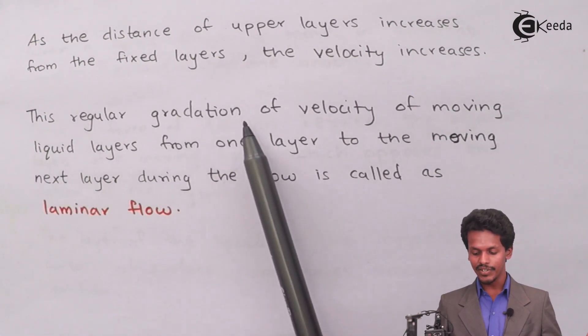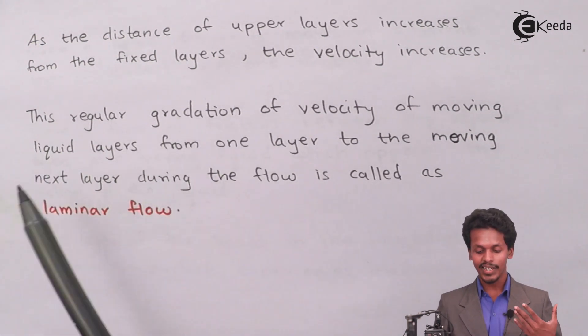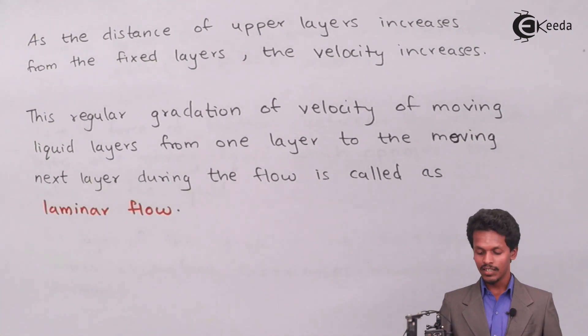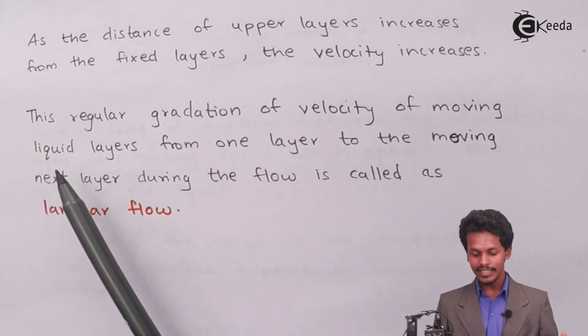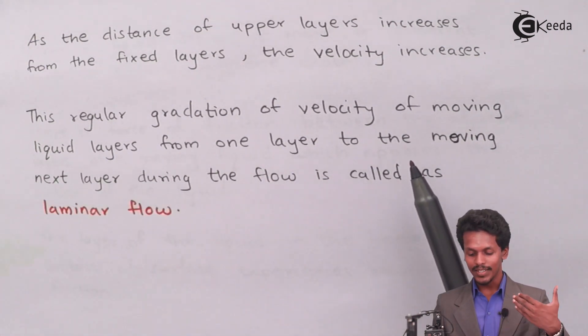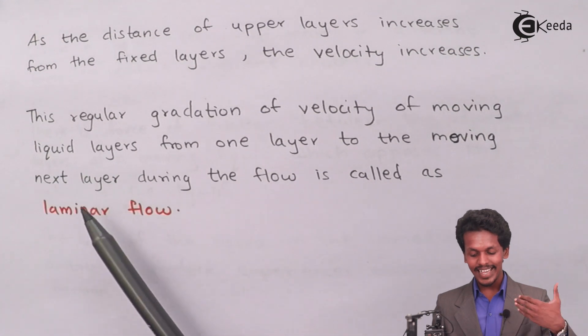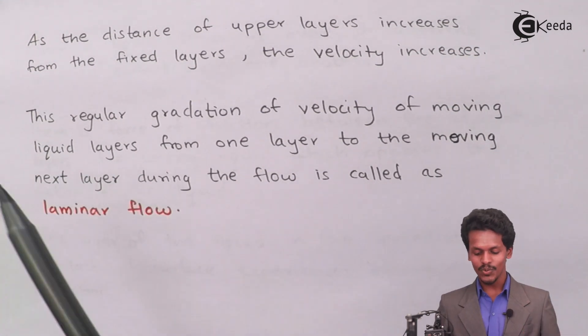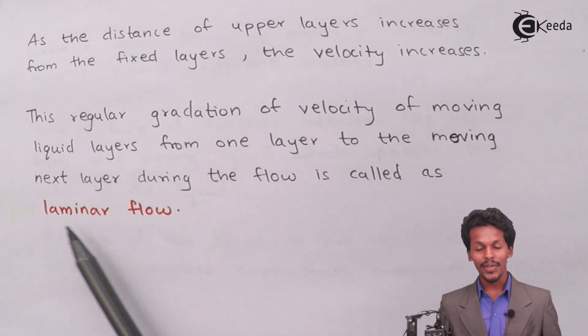This regular gradation of velocity of moving liquid layers from one layer to the next during flow is known as laminar flow.